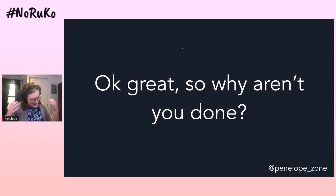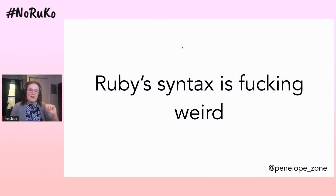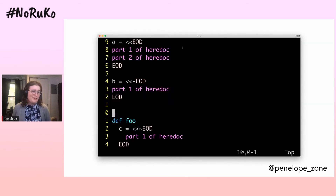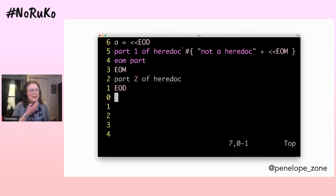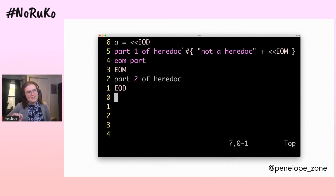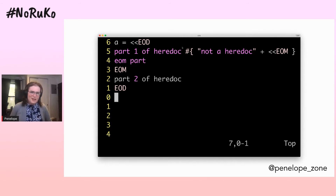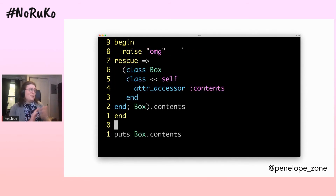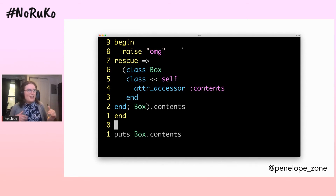So why aren't you done, Penelope? It turns out the syntax of the Ruby language is extremely complex. For example, this is how we write multi-line strings — we use heredocs. And you can embed heredocs inside other heredocs — this is a completely legal Ruby program. You can also define classes inside rescue clauses in begin/rescue blocks. These are legal Ruby programs that work and do something reasonable, and that means I have to be able to format them. These are real stress tests from Ruby Format's unit test suite.